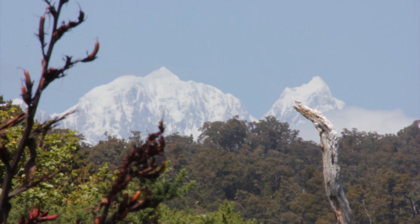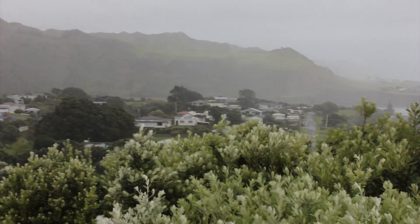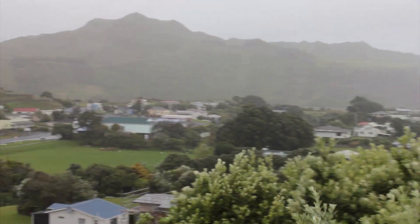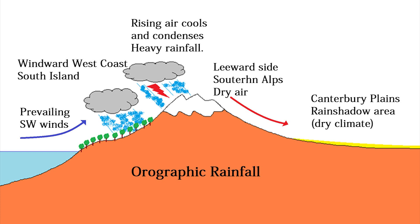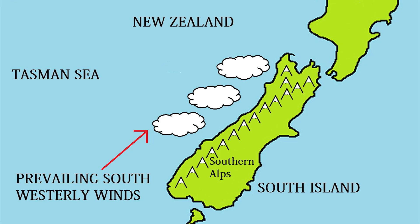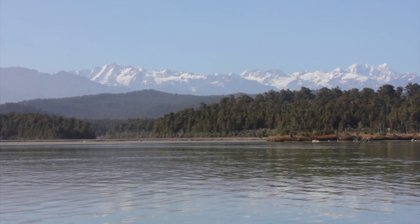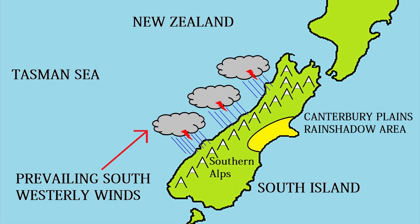Mountains can also influence climate in other ways. For example, they can produce what is known as orographic rainfall. This occurs when moist air is forced to rise over mountains. The windward side of the mountain will have a wet climate, while the sheltered leeward side usually has a drier climate — we call this the rain shadow area. For example, in New Zealand's South Island, the prevailing westerly winds force moist air from the Tasman Sea to rise over the Southern Alps. Most of the rainfall is dumped on the west coast, which has the wettest climate in New Zealand, while the climate east of the ranges in Canterbury is dry.